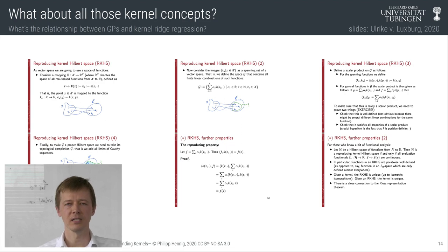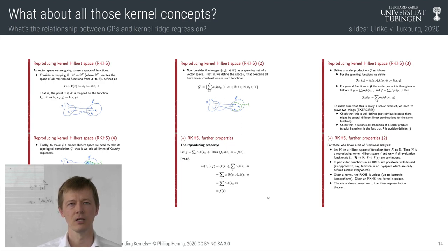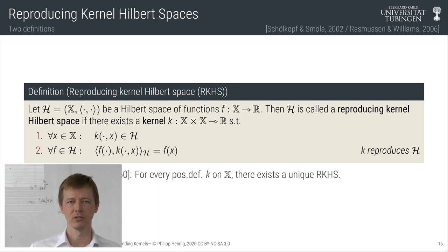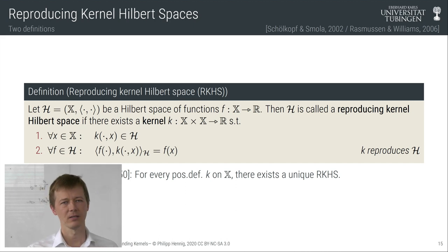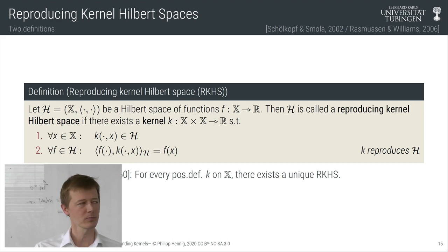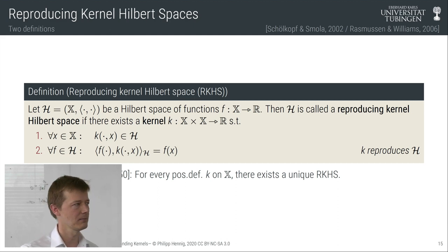Whether you are taking Ulrike von Luxburg's class or any other theory of machine learning class, if you've learned about the theory of kernel machines, you've come across the notion of a reproducing kernel Hilbert space, usually introduced in an abstract form and abbreviated RKHS. It's actually shorter to say than reproducing kernel Hilbert space, so I'll say RKHS sometimes as well.